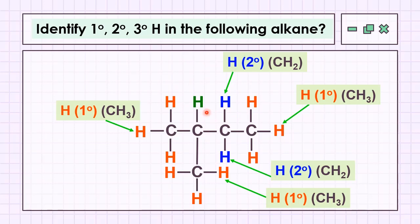And lastly, carbon bearing the hydrogen in green has one, two, and three carbons directly attached to it. Therefore, this hydrogen belongs to tertiary hydrogen.